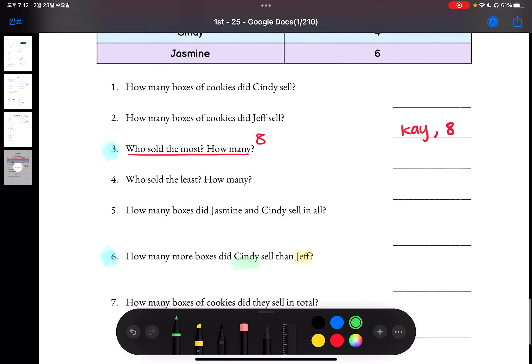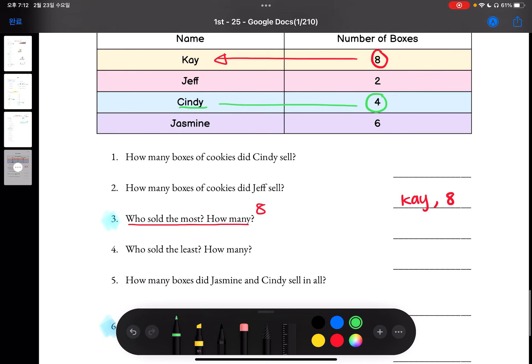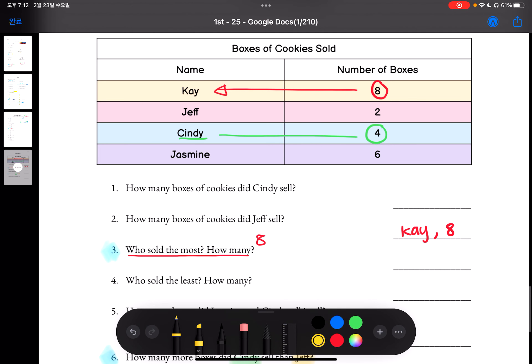Cindy's over here. Cindy sold 4 boxes of cookies. And when we look at Jeff, Jeff sold 2 boxes of cookies.